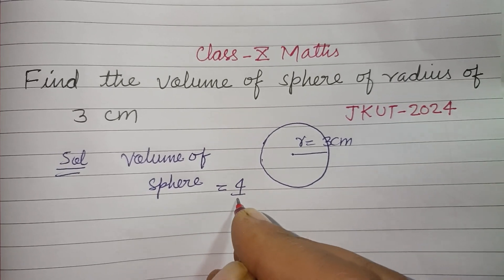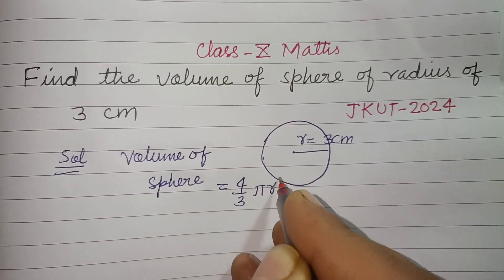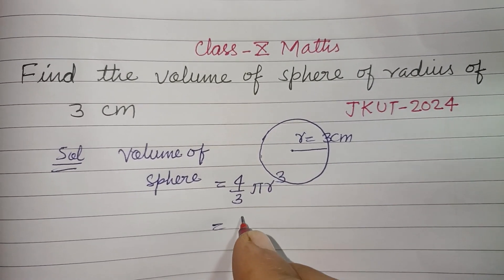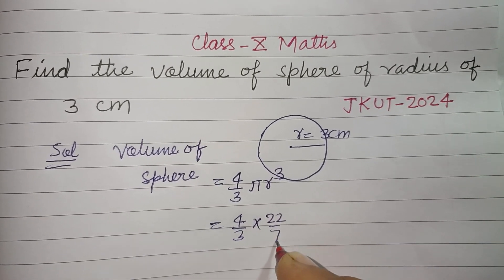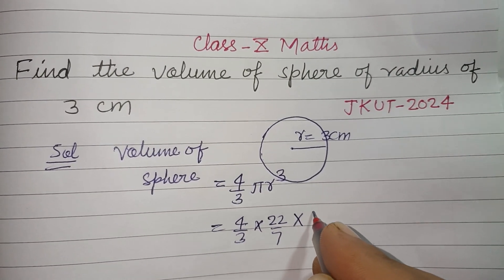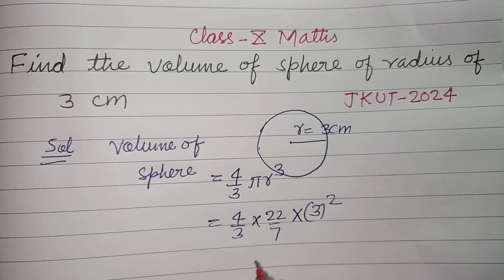Volume of sphere equals 4 by 3 pi r cube. So 4 by 3, pi is 22 over 7, into r is 3. So this is 3 cube.